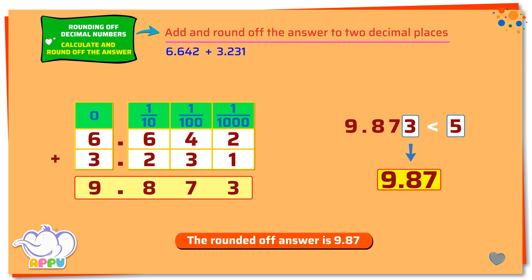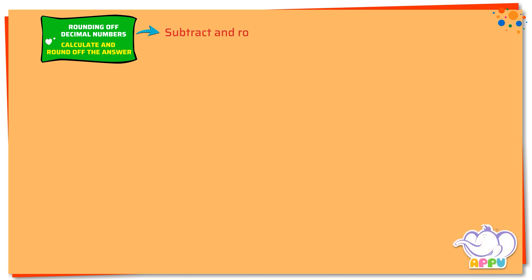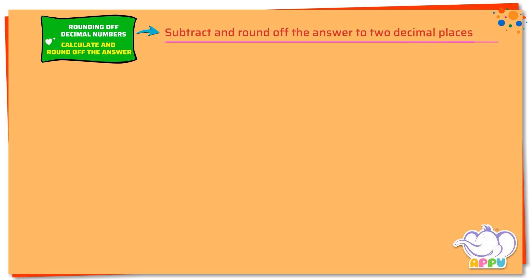You are learning fast. Subtract and round off the answer to two decimal places: 2.576 minus 0.431.